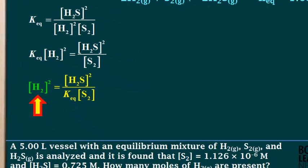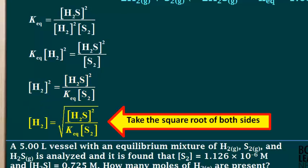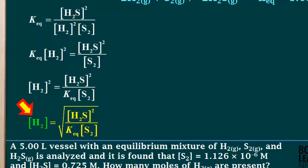Now we are solving the expression for the concentration of H₂ squared. We want to solve for the concentration of H₂, so we take the square root of both sides as shown here. Now we have solved the equation for the concentration of H₂.